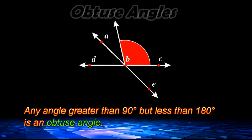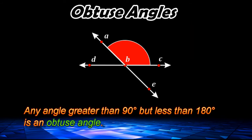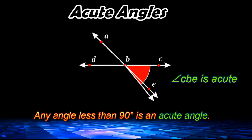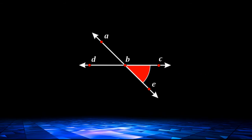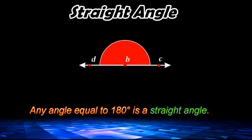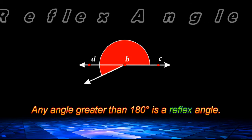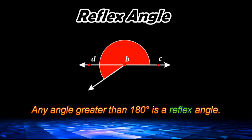An angle that is greater than 90 degrees but less than 180 is called an obtuse angle. Any angle measuring less than 90 degrees is called an acute angle. Any angle that measures exactly 180 degrees is called a straight angle. A 180-degree angle, or straight angle, would form exactly half of a circle, or half of 360 degrees. And anything that goes beyond a straight angle, or 180 degrees, is called a reflex angle.